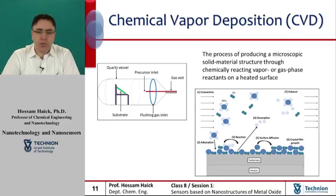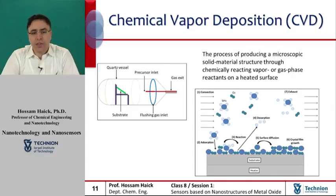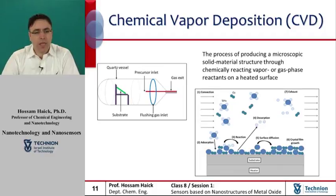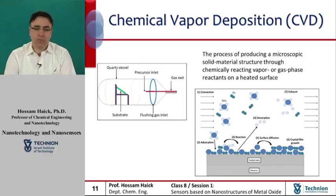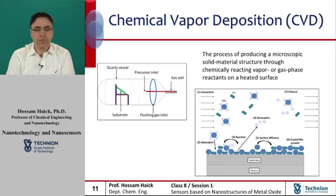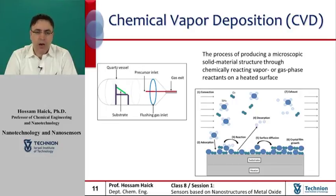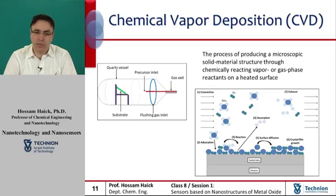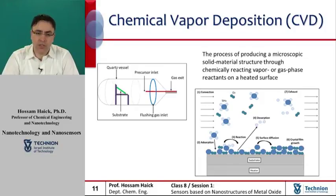A CVD apparatus consists of several basic components: sources and feed lines for gases, mass flow controllers for metering the gases into the system, a reaction chamber or reactor, a system for heating up the wafer on which the film is to be deposited, and temperature sensors. The fundamental principle of the CVD process is that the chemical reactants, called precursors, are in the gas or vapor state when they arrive at the substrate. A chemical reaction, usually activated by heat, occurs on the substrate surface, and the substrate temperature is quite critical and can influence what reactions take place and where.